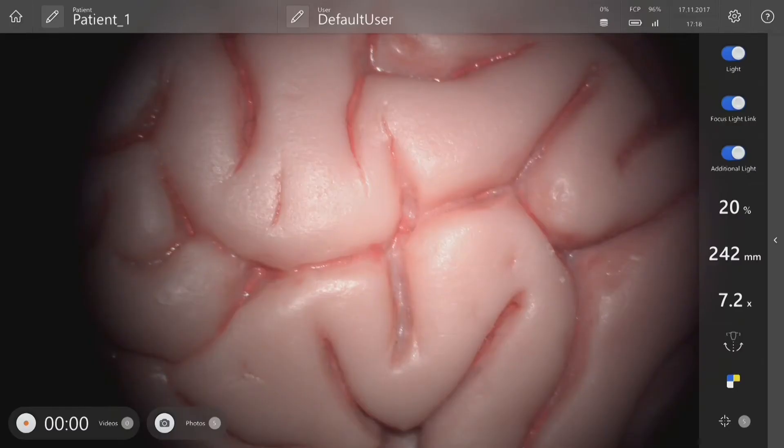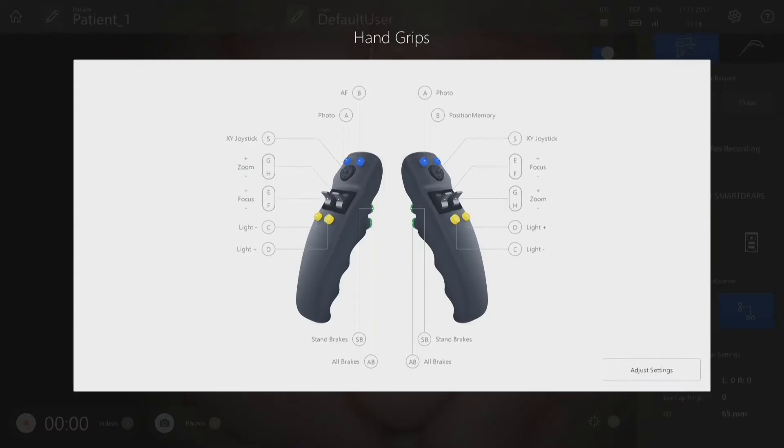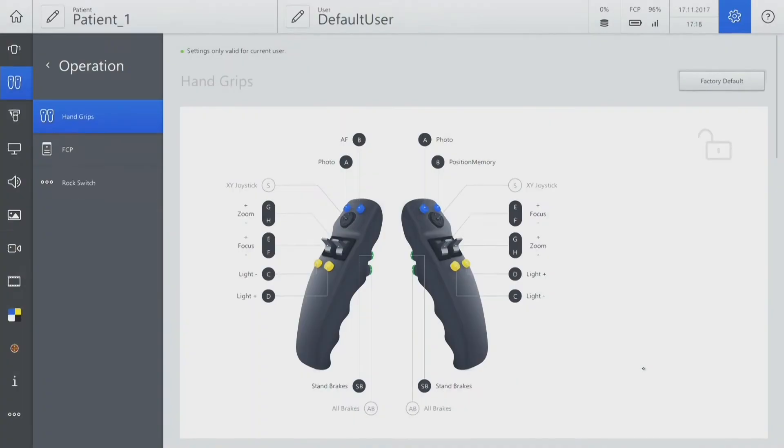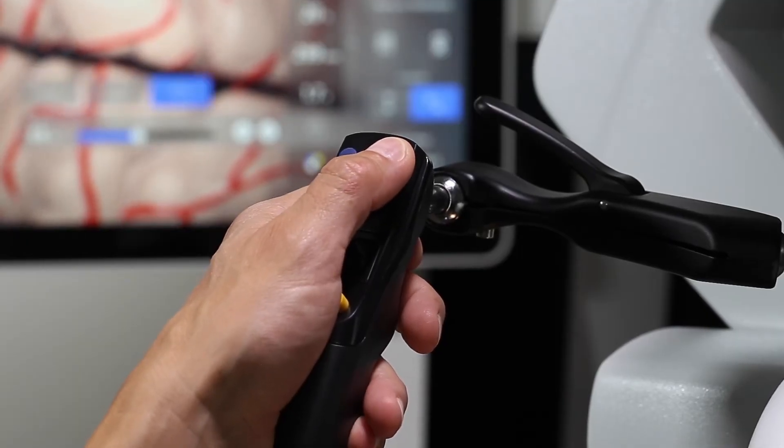To configure handgrips for activating different modes, open the handgrip icon from the main screen. Go to Adjust Settings. Configure XY mode to one of the buttons. Pressing this button enables toggling between different modes.